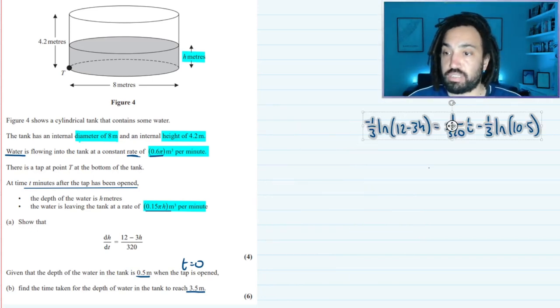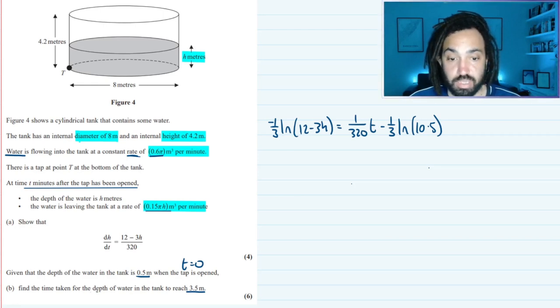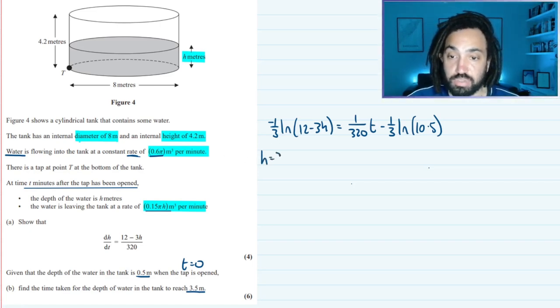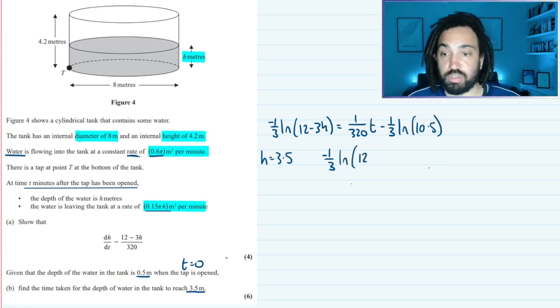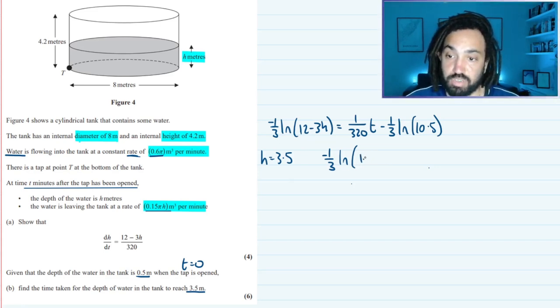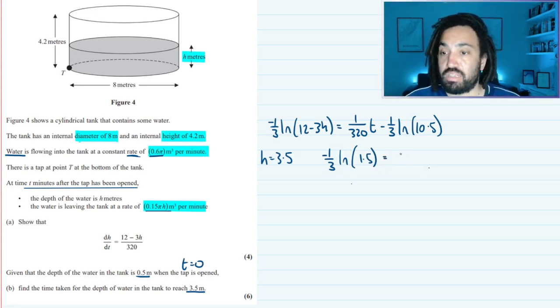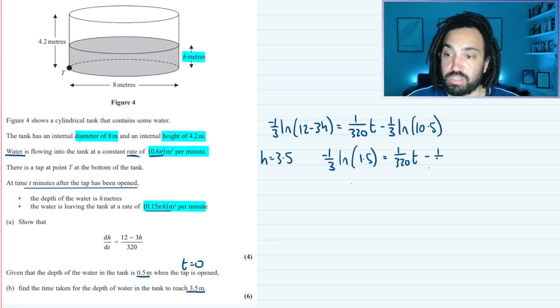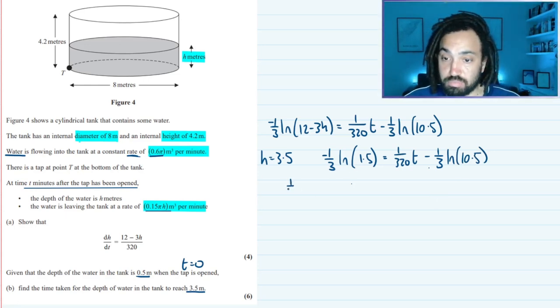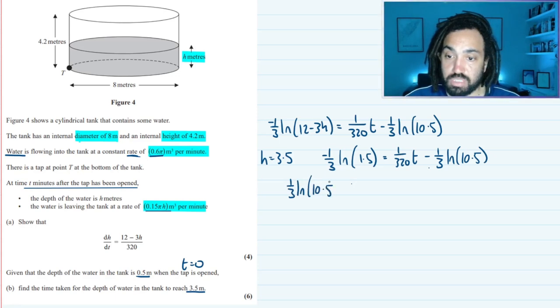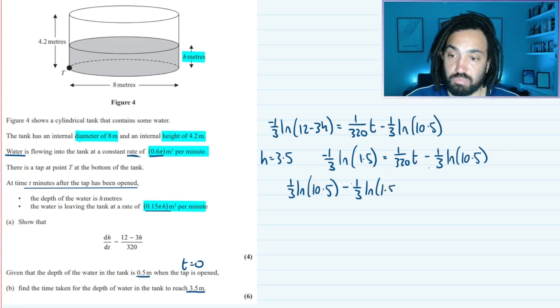Okay so next, what do we need to do next? Well we need to substitute in. It says the time taken for it to reach 3.5. So we need the height now to be equal to 3.5. And then we need to rearrange for t. So we're going to write minus a third ln of 12 and then 3.5 times minus 3 is minus 10.5. So that just gives me 1.5 in here when I sub in. And that's equal to 1/320 t minus a third ln(10.5). We can add that over. Comes positive on this side.